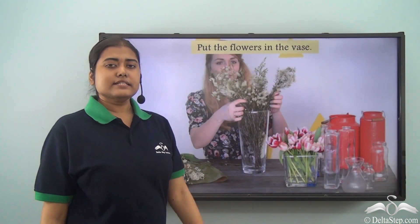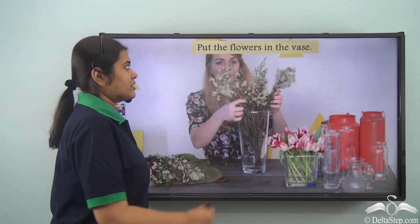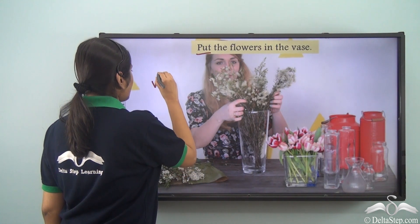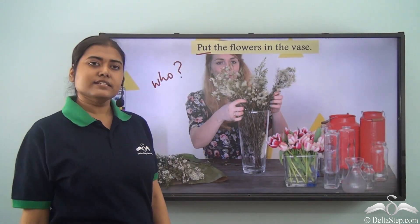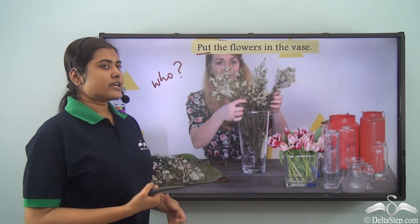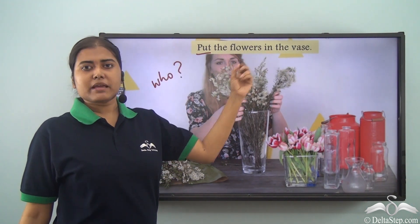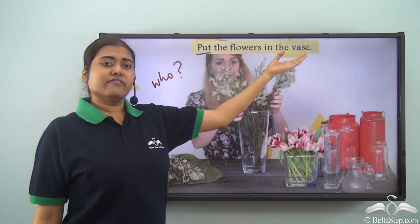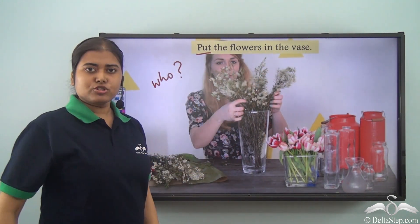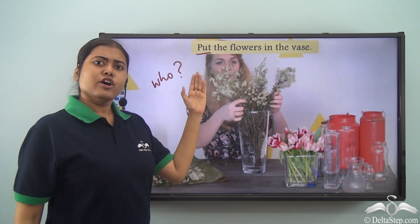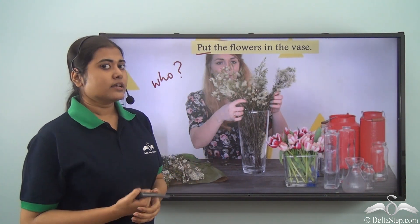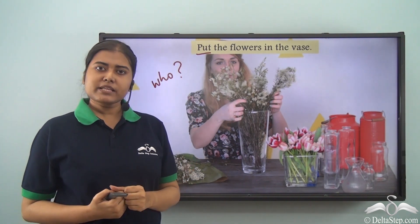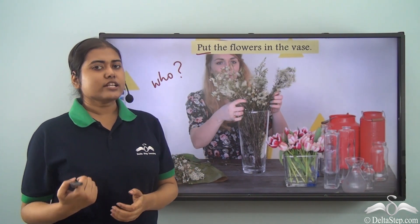Consider: 'Put the flowers in the vase.' The verb is 'put.' If we ask who put the flowers in the vase, we don't have an answer — there is no subject mentioned. We only have the nouns 'flowers' and 'vase,' but neither of them is performing the verb 'put.' So in this sentence, no subject is explicitly stated.